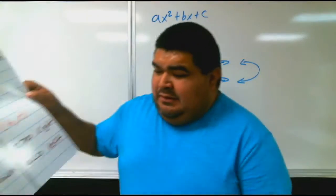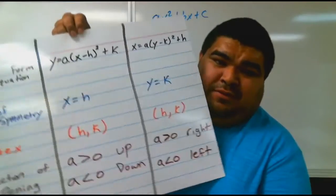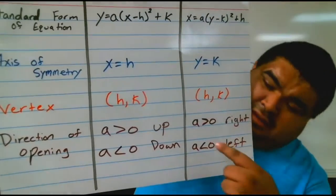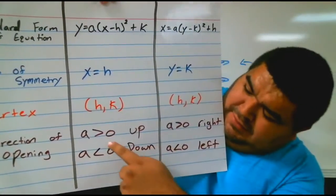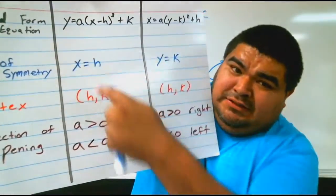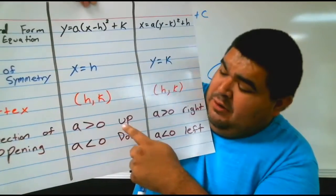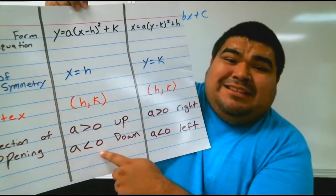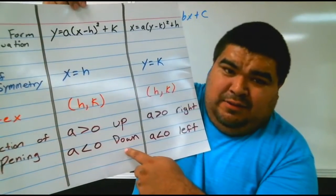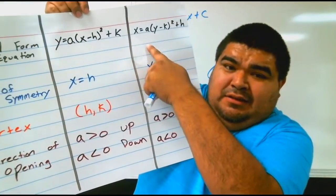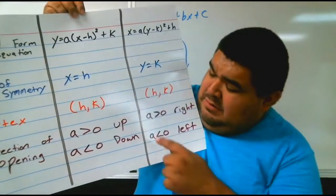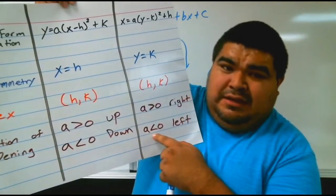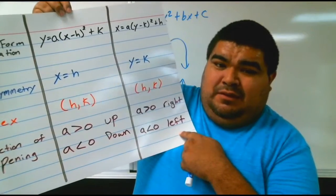For the direction of opening: if you're dealing with y equals and a is bigger than zero, it opens up. If a is less than zero — meaning it's negative — it opens down. When dealing with x equals, if a is greater than zero, it opens to the right. If a is less than zero, it opens to the left.